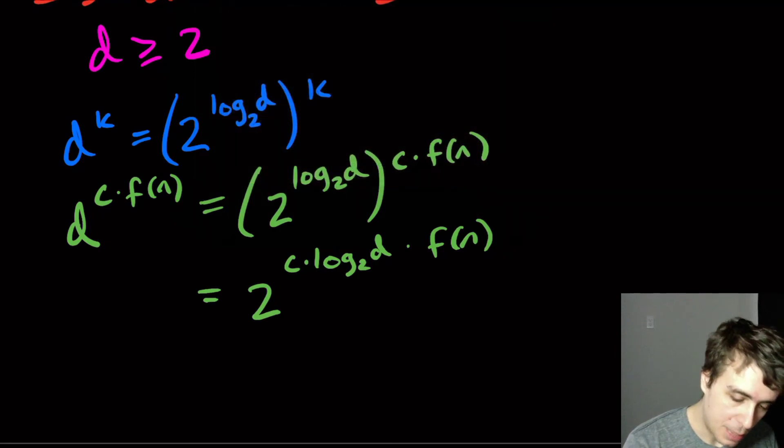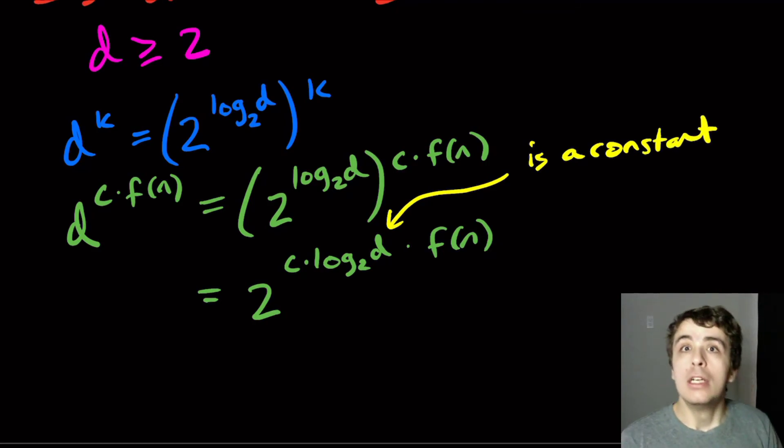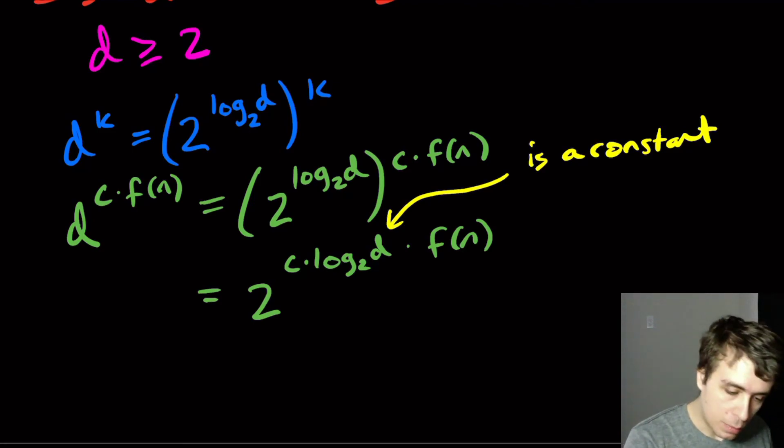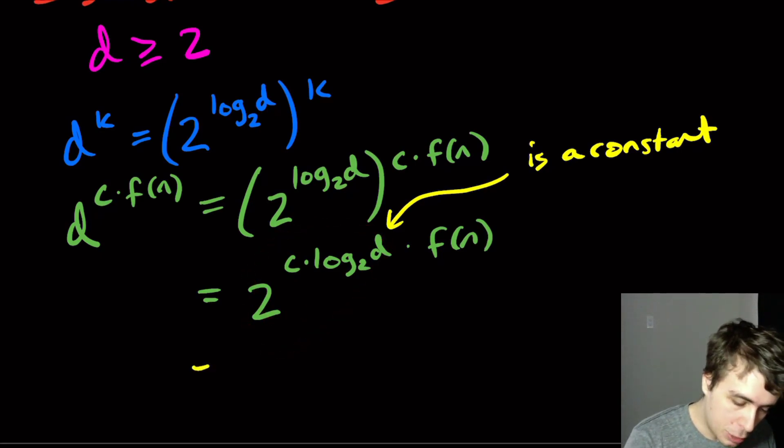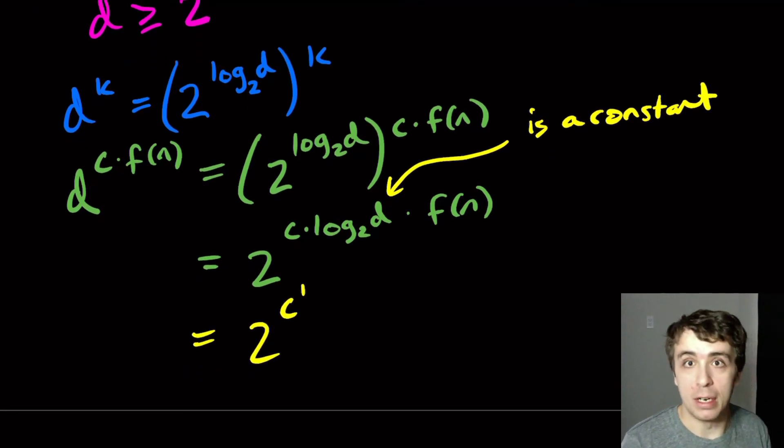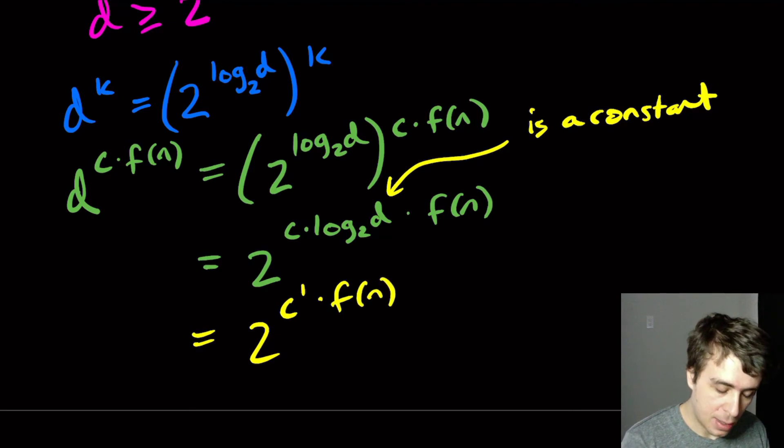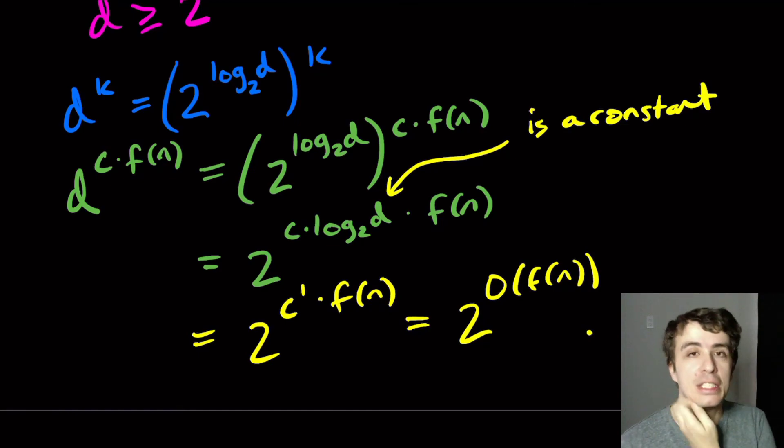And the crucial step here is this thing is a constant. And why is it a constant? So given the Turing machine, the D parameter is a constant. Okay, so we're measuring the runtime here based on the length of the input, not the machine itself. So this stuff right here is completely a constant. So what I'm going to do is I'm going to rewrite this as C prime. So it's just a different constant times f(n). And since we have a constant upstairs, this is going to be 2 to the power big O of f(n).